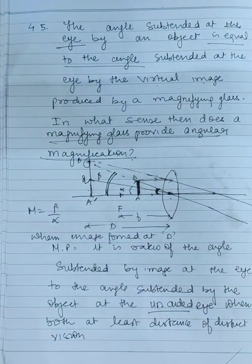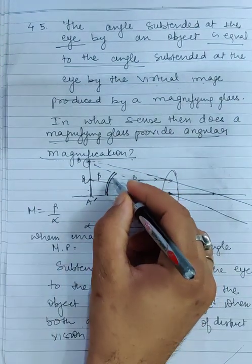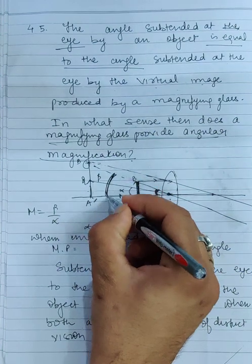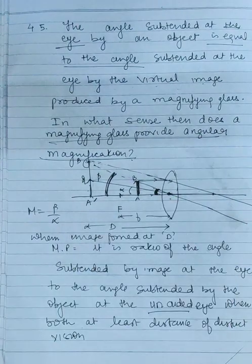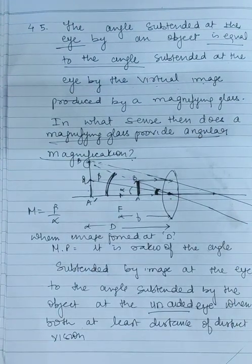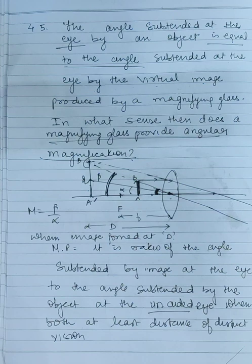Look at this angle. So in both cases, we go to the object placed at D and then determine the magnifying power ratio.